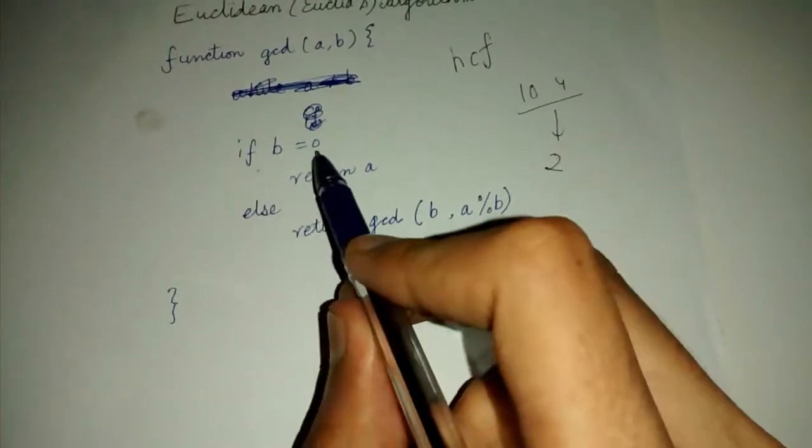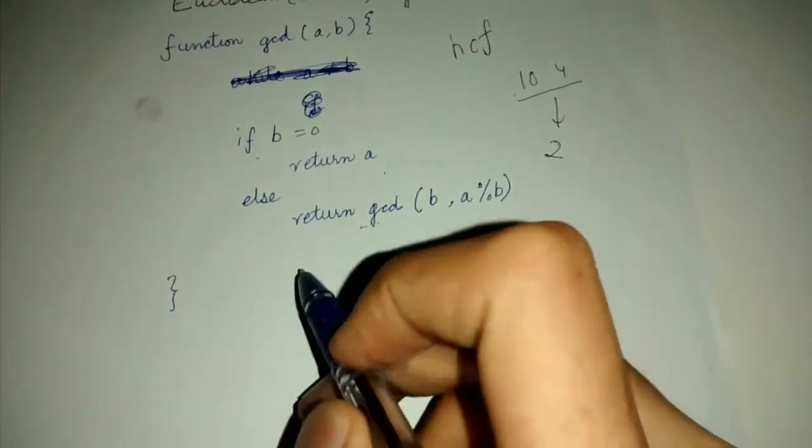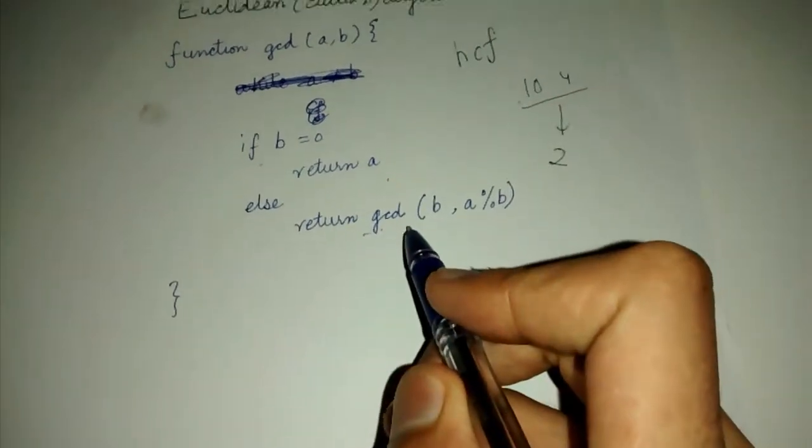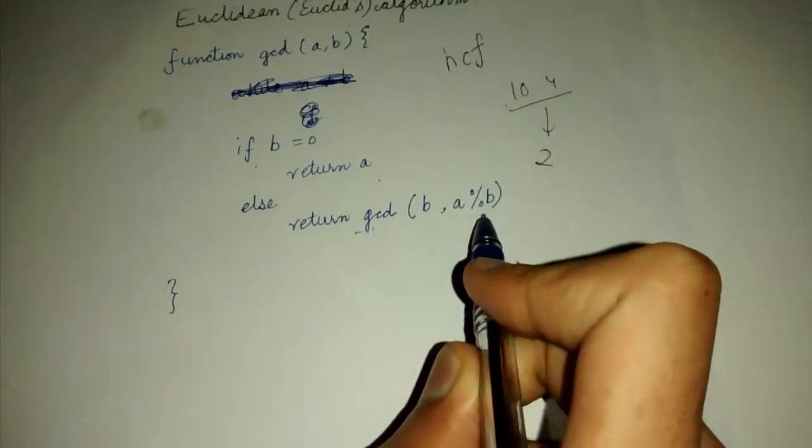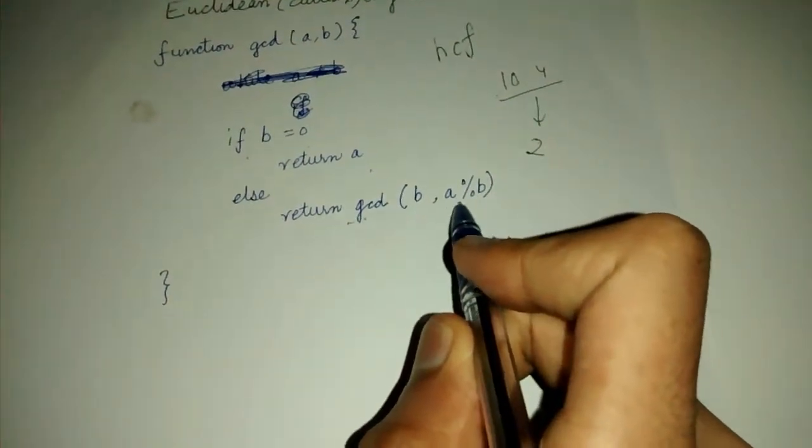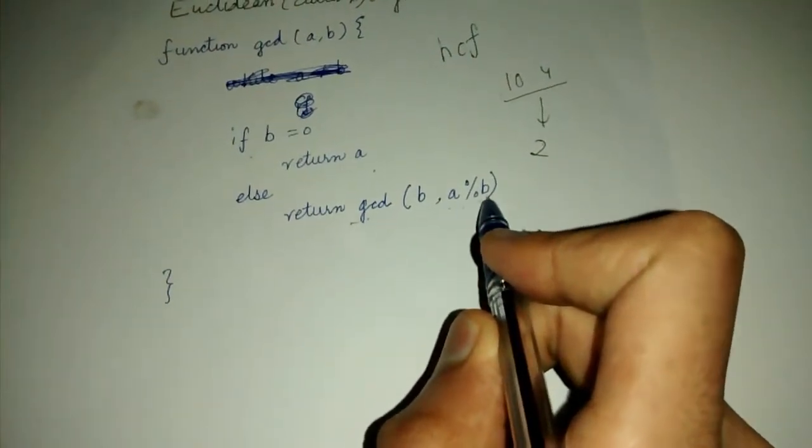If B is equal to 0, we simply return A. Otherwise we return GCD of B and A percentage B. A percentage B is the remainder when A is divided by B, which we also call as A mod B.